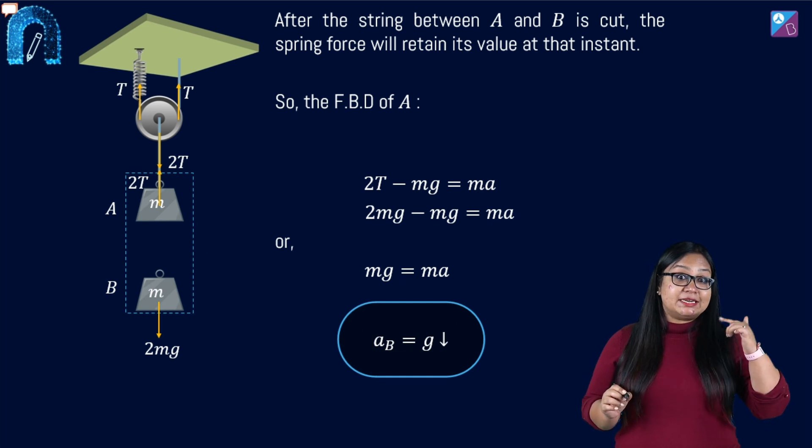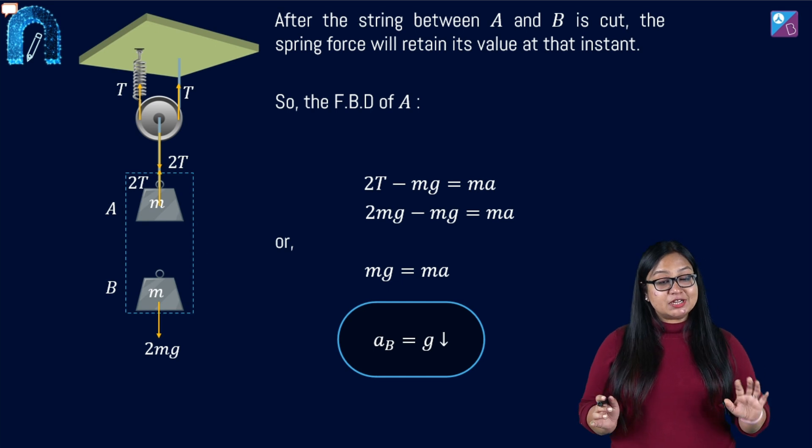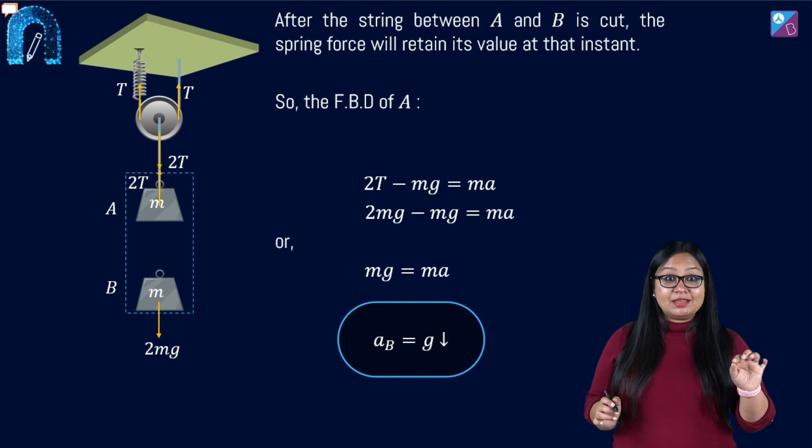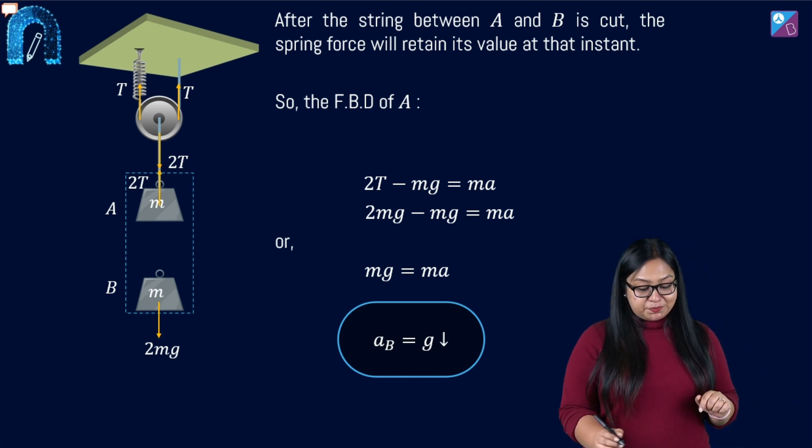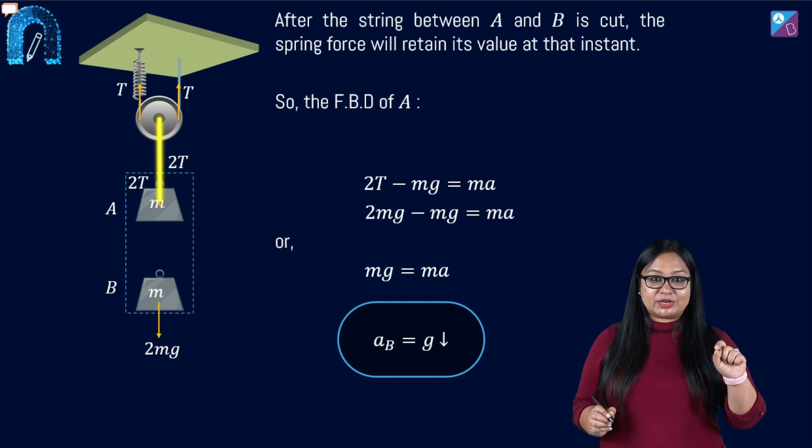For that, we can apply Newton's second law of motion in vertical direction. We can write the forces in vertical direction. So I can say that vertically upwards there is tension in string AP. So 2T minus MG is equal to mass into acceleration.